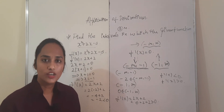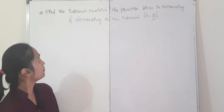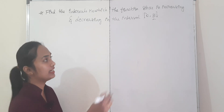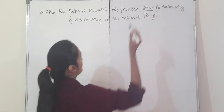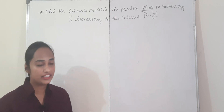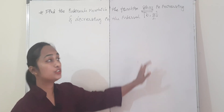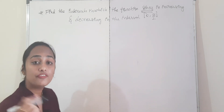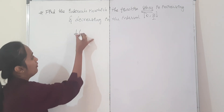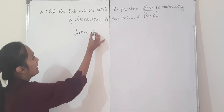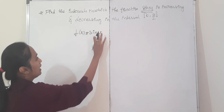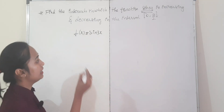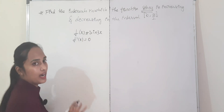Let's go to the next question. Find the intervals in which the given function f(x) = sin(3x) is increasing and decreasing in the interval [0, π/2]. The interval is given here, so we don't need to find it separately — we need to divide it. So f(x) = sin(3x). Find f′(x) and equate it to 0.